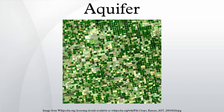An aquitard is a zone within the Earth that restricts the flow of groundwater from one aquifer to another. An aquitard can sometimes, if completely impermeable, be called an aquiclude or aquifuge. Aquitards are composed of layers of either clay or non-porous rock with low hydraulic conductivity.